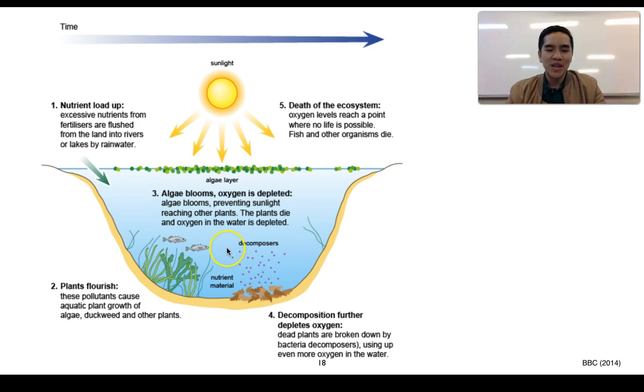So what that would mean is that other organisms which may depend on the plants, or depend on organisms which depend on those plants, will eventually run out of food and they will die off. This is going to continue to affect those other organisms within the food chains and result in a potential death of the entire ecosystem.